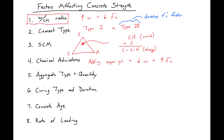Aggregate type and quantity can also affect the strength. For a weak aggregate, we can see at the interface with the aggregate — say this is our failure crack — failure can occur through the aggregate. For a stronger aggregate, failure may occur around the aggregate. This will affect the strength and stiffness of the system.